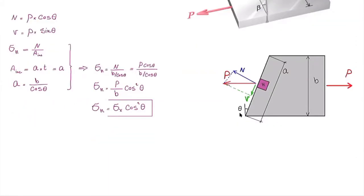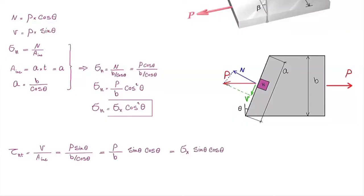Similarly, we can determine shear stress on the inclined plane: tau = V/A = (p·sin(θ)) / (b/cos(θ)), which simplifies to sigma_x·sin(θ)·cos(θ). On the original plane there was no shear stress, but on the inclined plane shear stress appears — produced by transforming part of the normal stress sigma_x into shear stress. Note that forces N and V are not additional forces; they are simply projections of force p in two different directions.